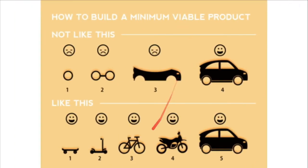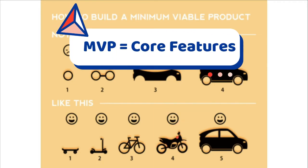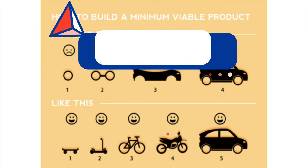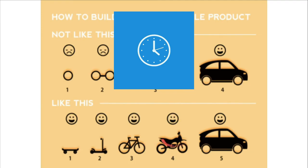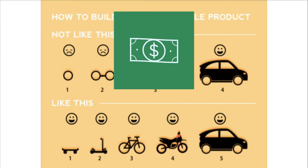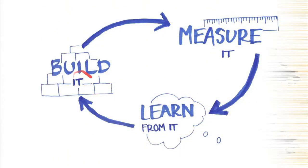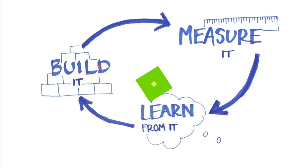You can use the MVP to quickly check how the market is reacting to your product, collect feedback from your customers, and improve your product continuously until it becomes mature. Remember, MVP will have only the core features. One of the main benefits of MVP is that we can quickly check how customers are reacting to our product without wasting much money or time. Start with the core features, launch it, get feedback, measure it, learn from it, and keep improving your MVP until it becomes a mature product.